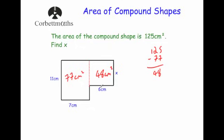We know one side of that rectangle is 6, and we need to times it by x to get 48. So 48 divided by 6 equals 8 centimeters — this length x must be 8 centimeters, because 6 times 8 is 48.